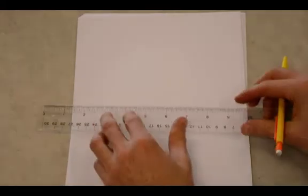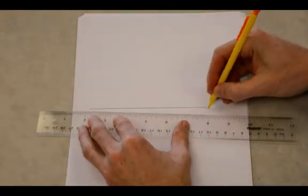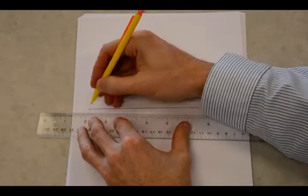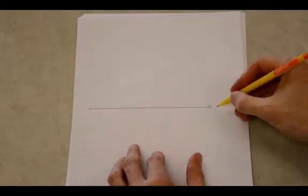I'm going to construct a line that's parallel to a given line. First, I'm going to draw a line to start with. I'm just going to call that line L.